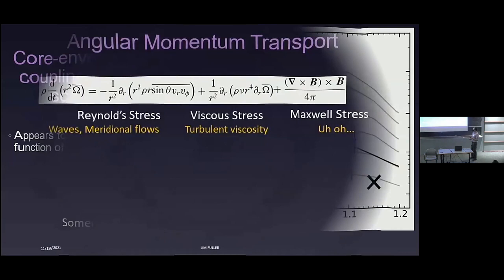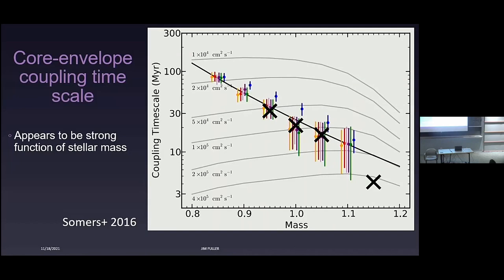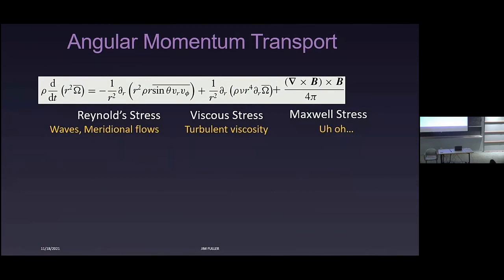It's a little hard to understand all this in light of asteroseismic measurements of red giants, where there's much more core-envelope coupling than expected. So it's hard to put all these pieces of data together in one self-consistent theory that can explain everything.